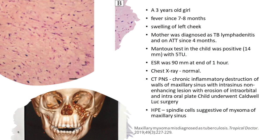We had a three-year-old girl with fever for seven to eight months and a swelling over the left cheek. The mother was diagnosed with TB lymphadenopathy. The child's Mantoux was positive, ESR was 90, and chest x-ray was normal, so she was referred to us for starting anti-TB treatment. CT showed chronic inflammatory destruction of the maxillary sinus with a mass. Surgery confirmed it was a myxoma. Just because the mother had TB and the child's Mantoux was positive, don't assume every swelling is TB — you could miss other diagnoses.